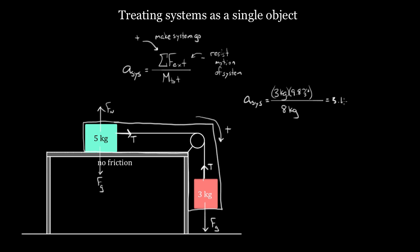This trick is amazing, and it works in every example where two or more masses are forced to move with the same acceleration. To show you how useful it is, let's say there was friction — a coefficient of friction of 0.3. Now I'd have an external frictional force applied to this five kilogram mass, so I'd have to subtract it.